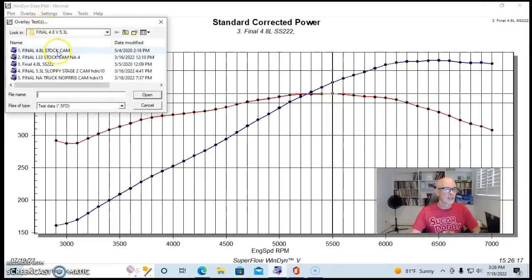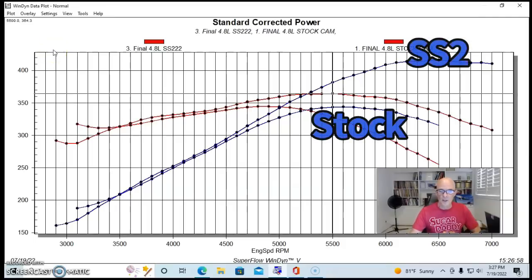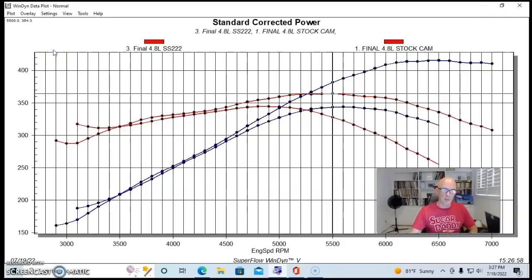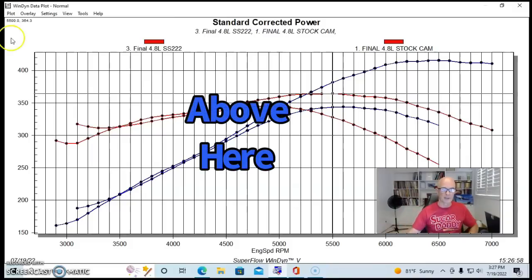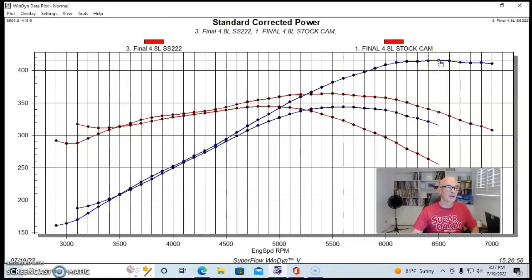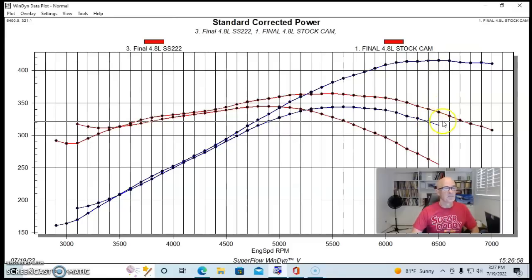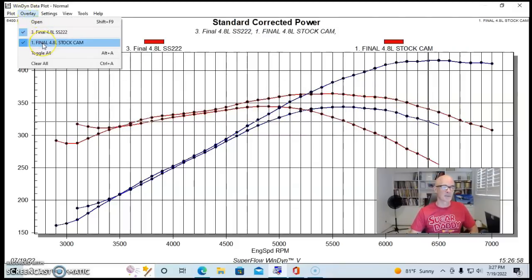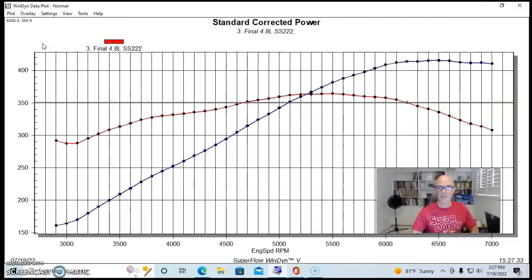Here's what it looked like with the stock cam. The Sloppy Stage 2 did make more power than the stock cam and was most effective past 4500 RPM. Down at 4500 RPM we had a difference of three or four horsepower, but way out here at 6500 we had 415 versus 318, almost 100 horsepower. That's the difference between the stock cam and the Sloppy Stage 2.